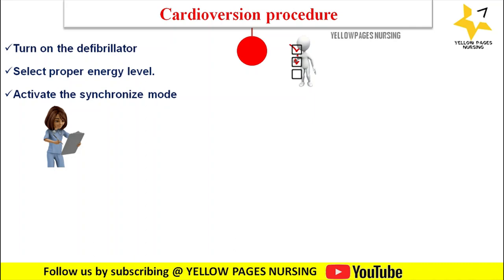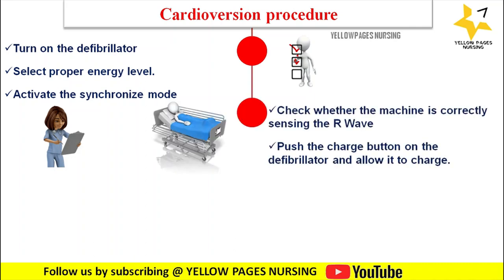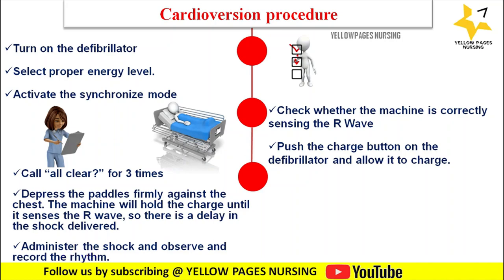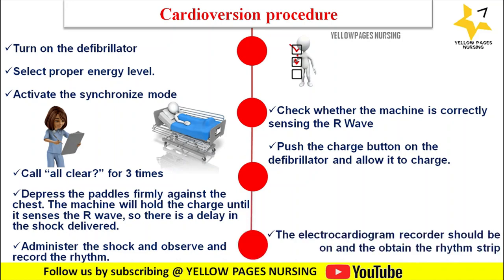Turn on the defibrillator and select the proper energy level. Activate the synchronized mode and check that the machine is correctly sensing the R wave. Push the charge button and allow it to charge. Call clear three times before pressing the discharge button: on the first call, ensure you are not touching the patient, bed, or equipment; on the second call, ensure no one is touching the bed, patient, or equipment; on the third call, perform a final visual check that you and everyone else are clear. Depress the paddles firmly against the chest — the machine will hold the charge until it senses the R wave, causing a delay. Administer the shock, then observe and record the rhythm. If the arrhythmia is not corrected, repeat the procedure using the next energy level.